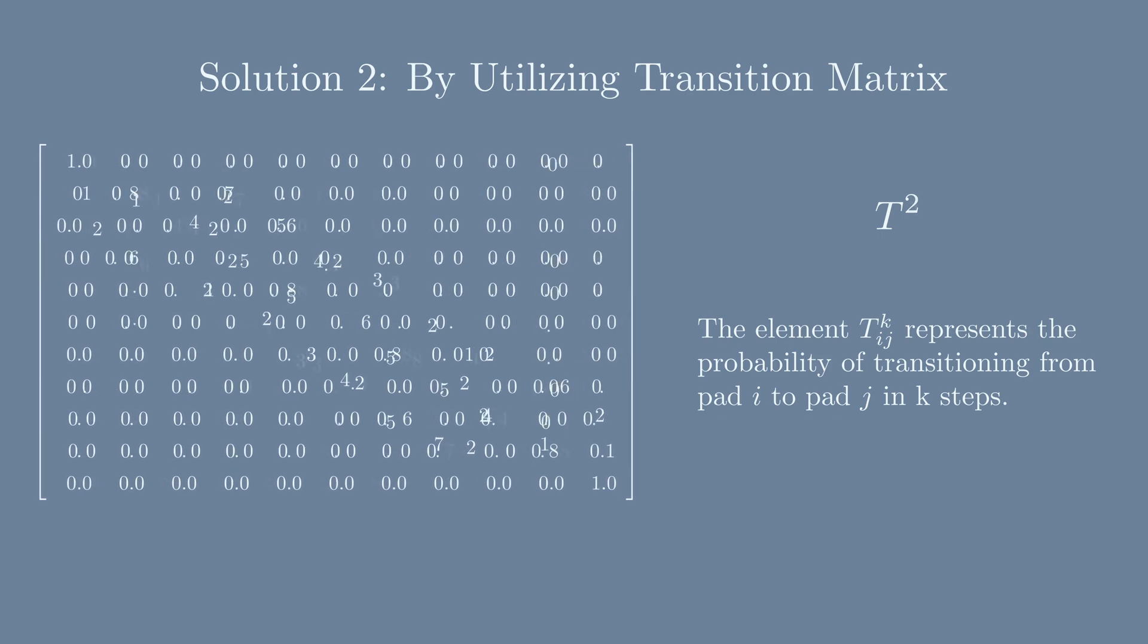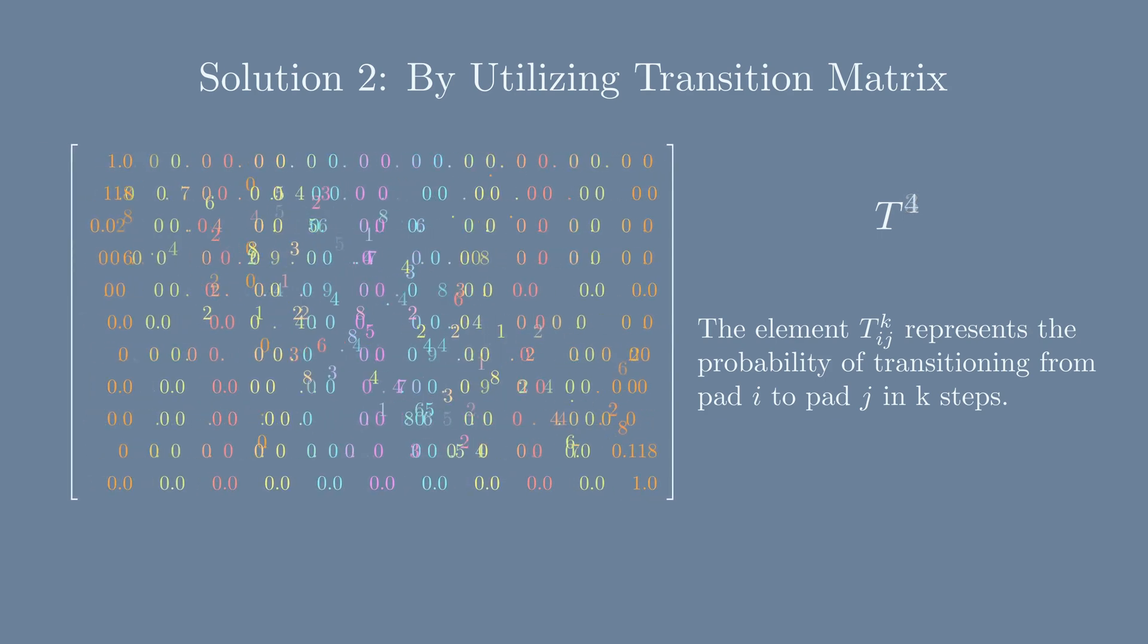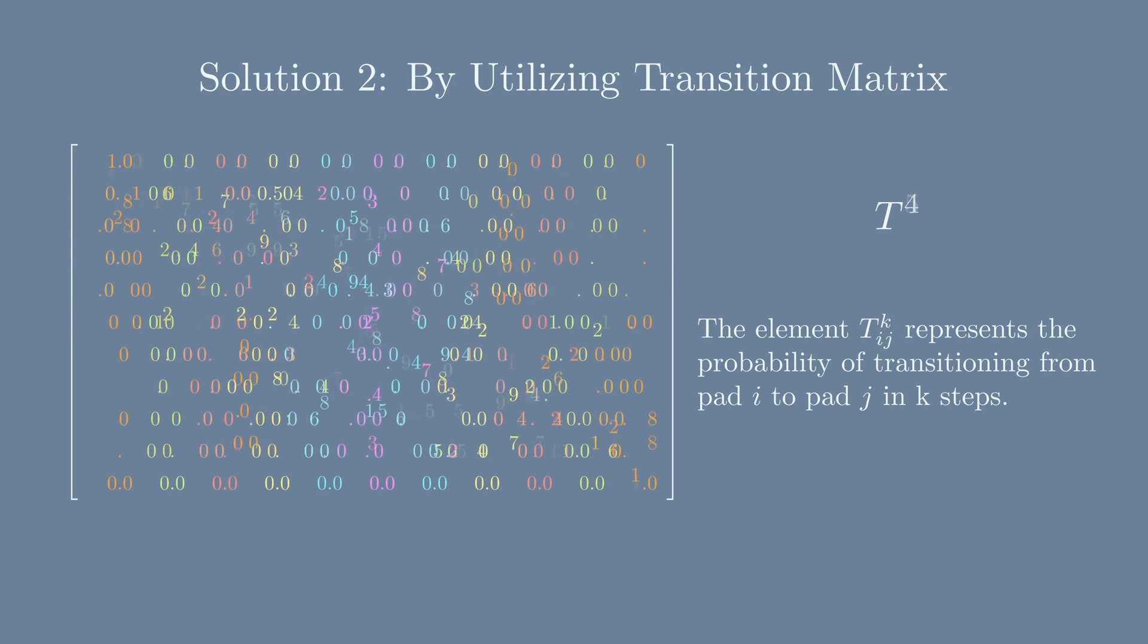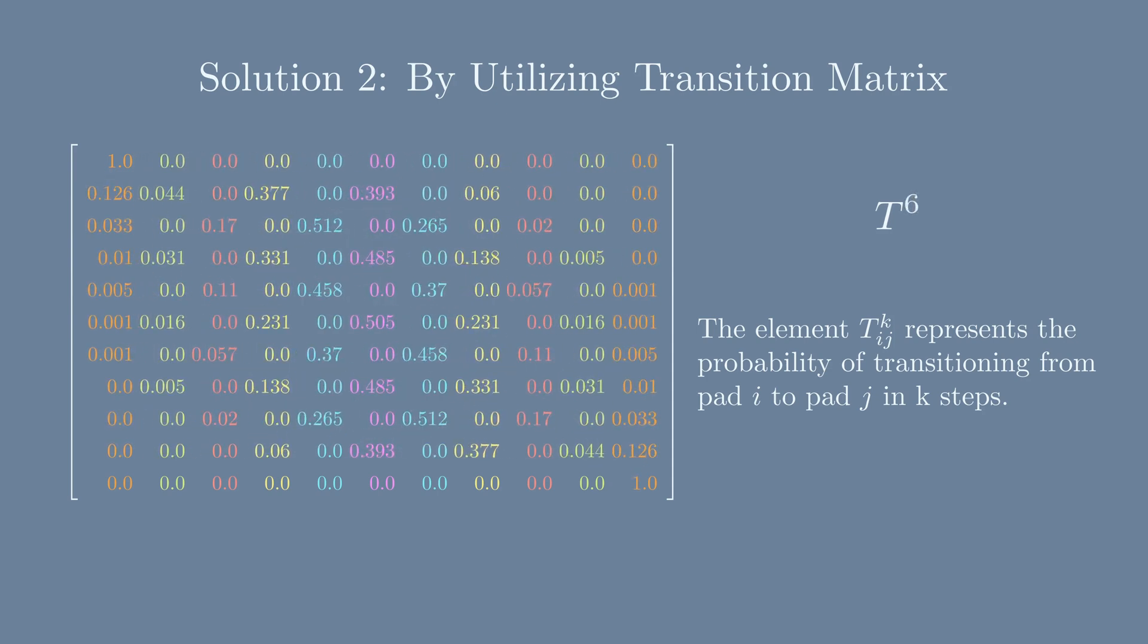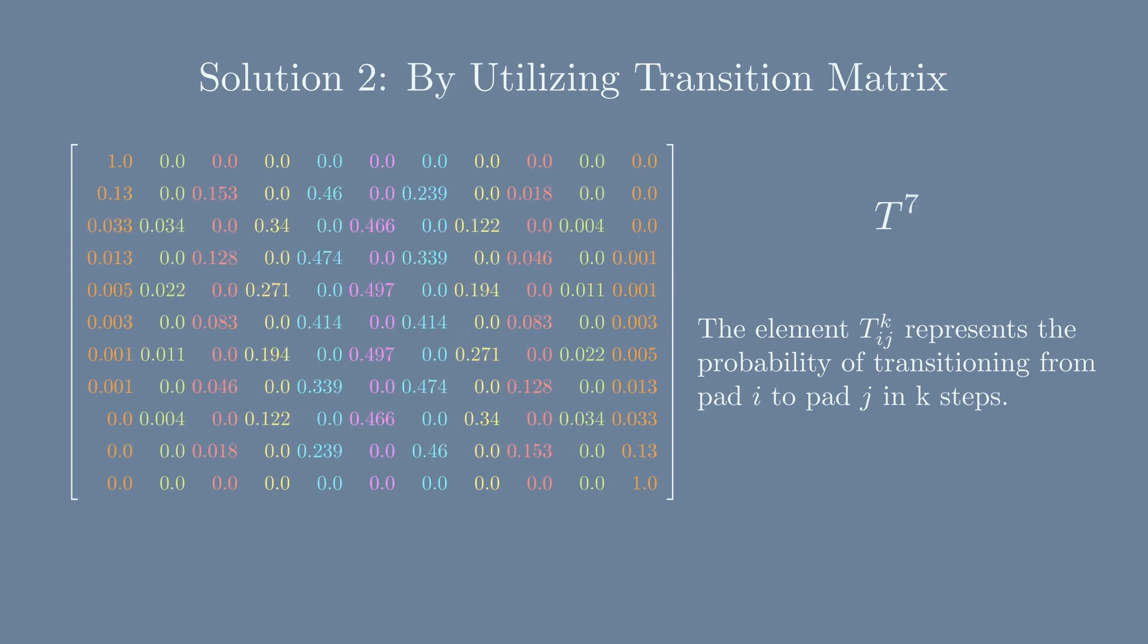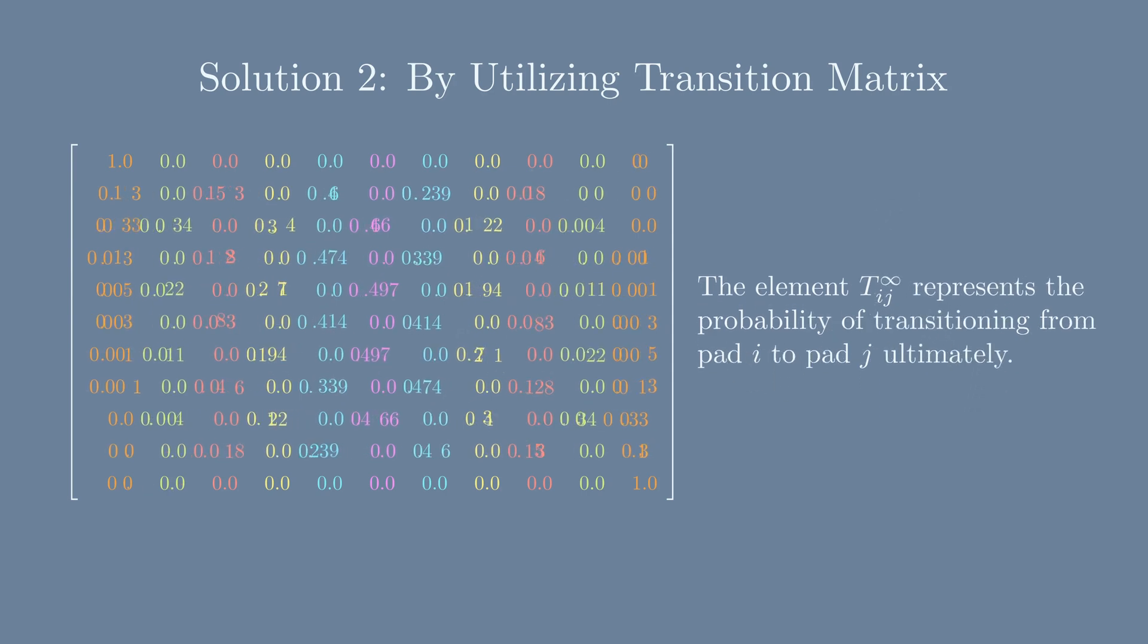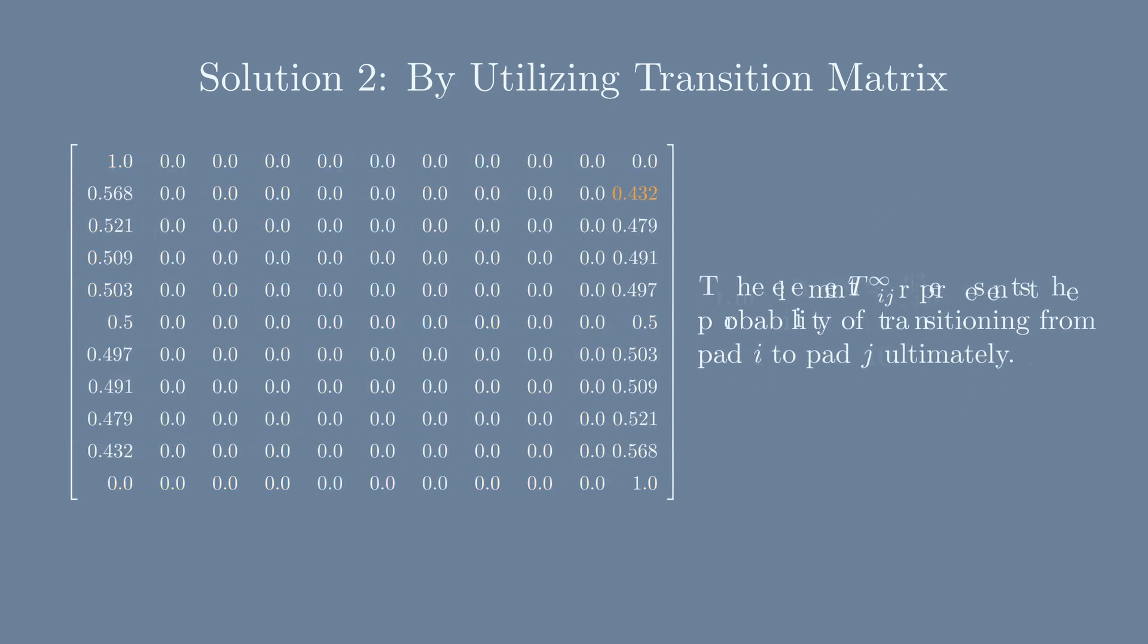This operation can continue and we will see that the lily pads are becoming more and more connected after more and more steps. Now let's push the matrix exponentiation to infinity. T∞[1,10] is the probability of transitioning from pad 1 to pad 10 ultimately, and it's exactly the value we are looking for.